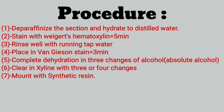Procedure of Van Gieson stain: First, deparaffinize the section — place the slide on a slide warming table or hot air oven for 5–10 minutes. Then hydrate to distilled water, so that any water or toxic substance in the tissues can be absorbed and fresh water can reach the tissues. Second, stain with Weigert's iron hematoxylin solution for 5 minutes, then rinse in running tap water for 5 minutes.